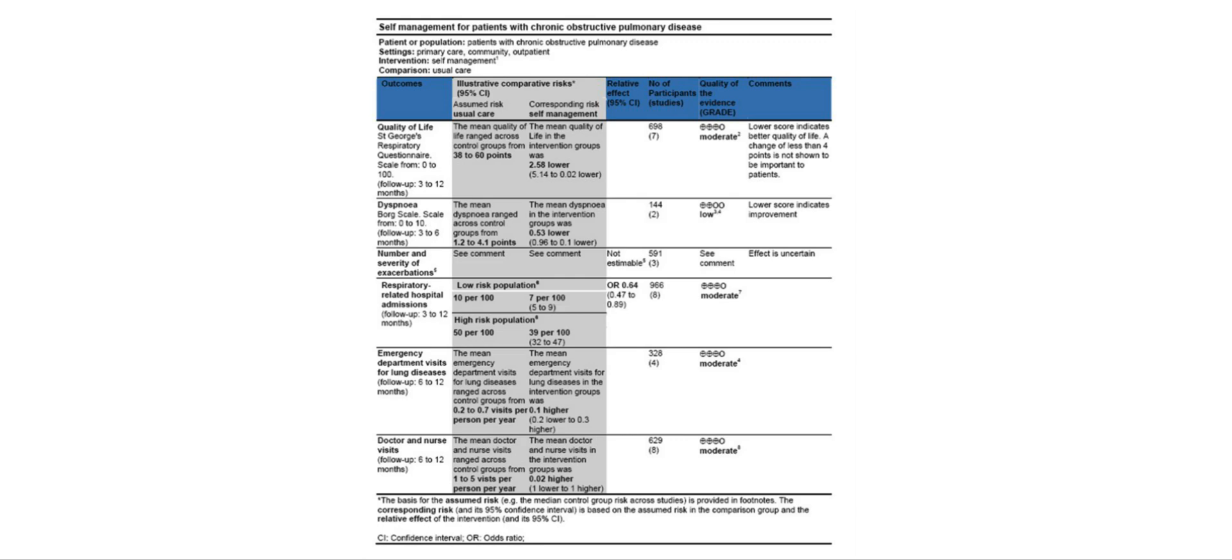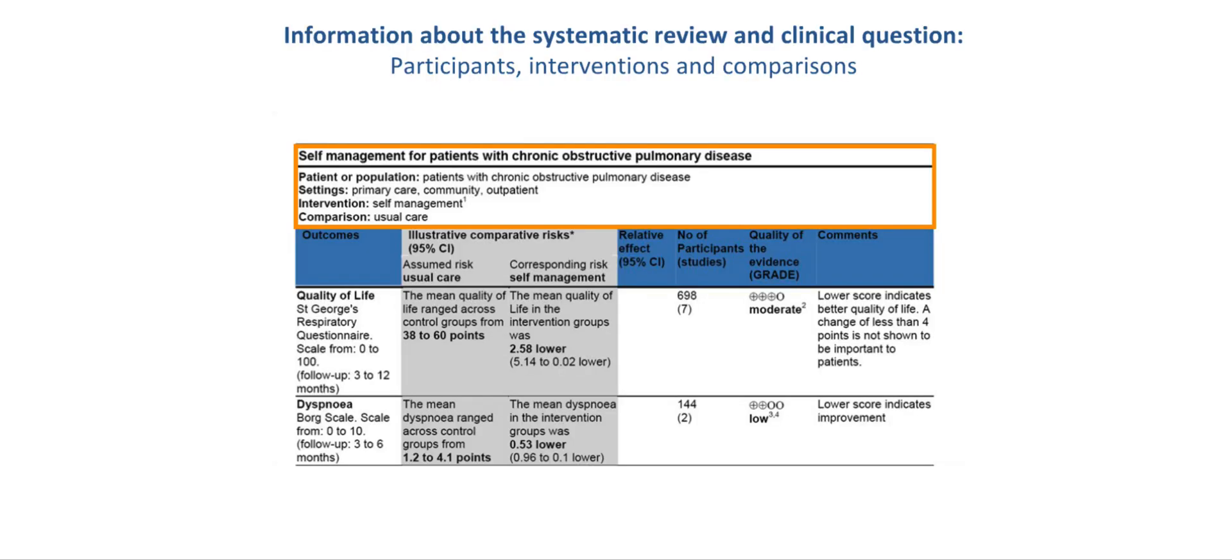This slide shows a Summary of Findings table in an overview. Factors that were just described are depicted in the Summary of Findings table. Let me start by explaining the components of the Summary of Findings table in greater detail. The red frame box indicates the formulation of the clinical question. It includes the patient population or the population in general, the interventions, and the comparisons. It is presented at the top of the Summary of Findings table. The outcomes are listed below.